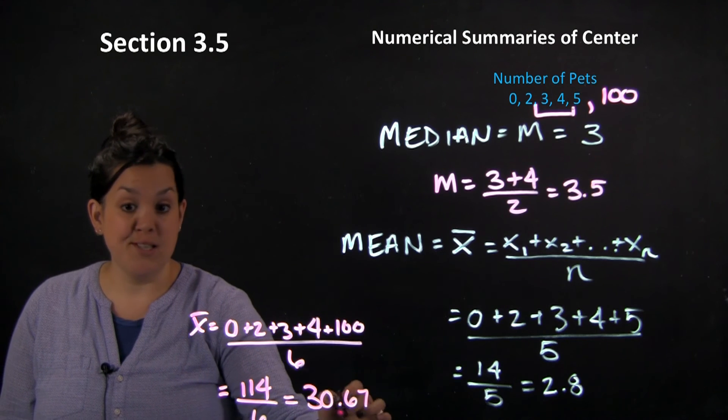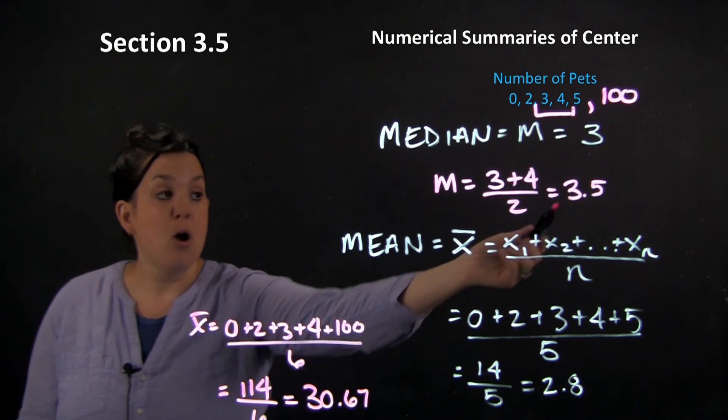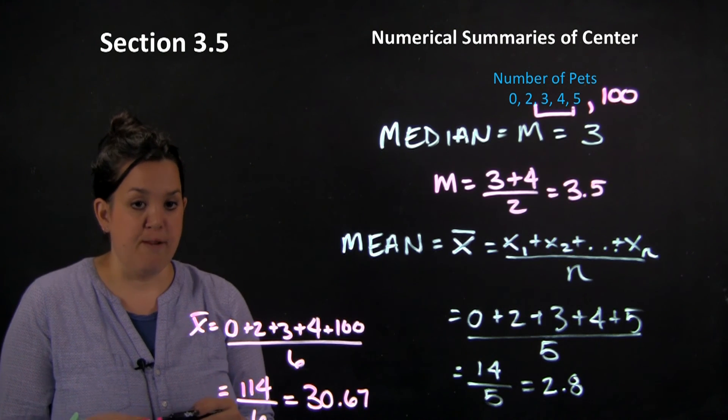Here I have a mean of 30.6. It's very, very largely impacted by that outlier, whereas the median is not. I only moved a little bit with 3.5.